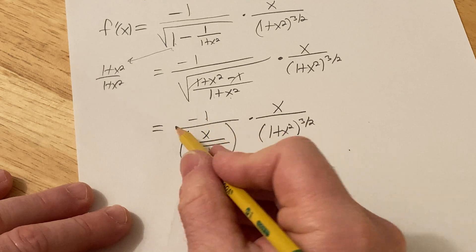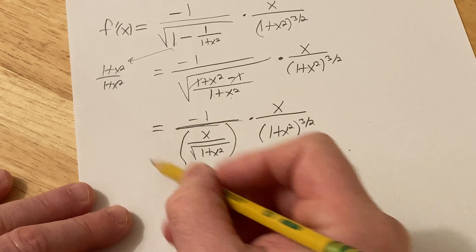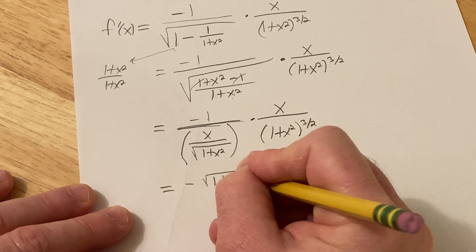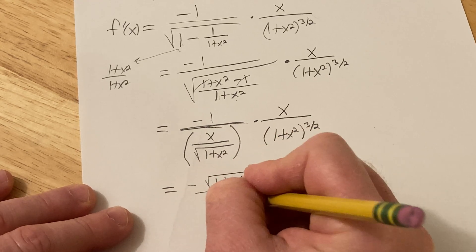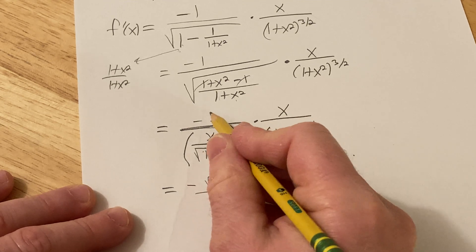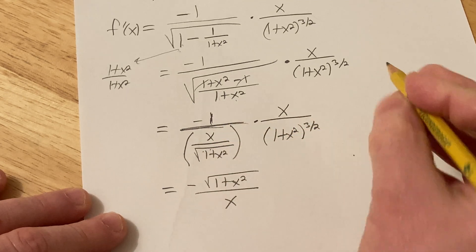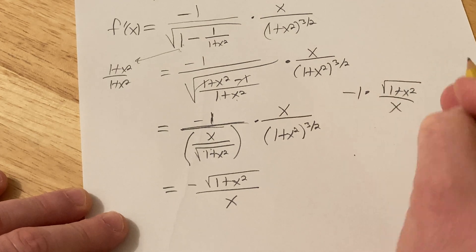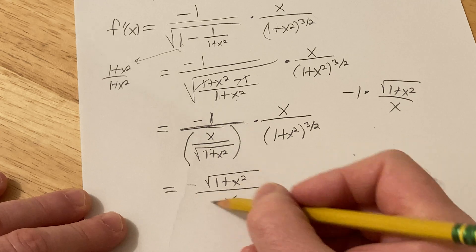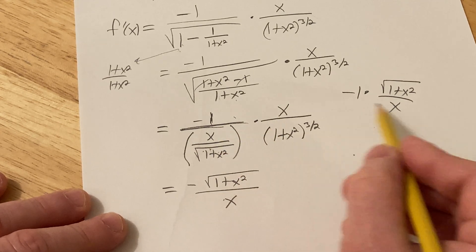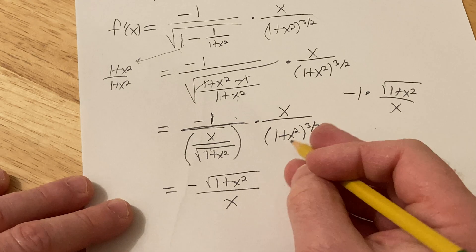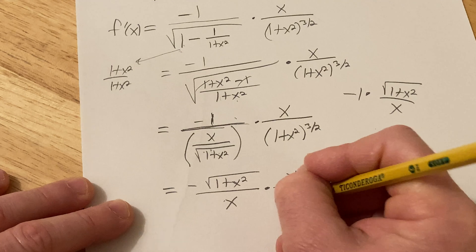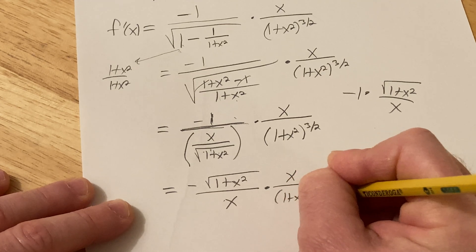All right, and then negative 1 divided by all of this basically means you multiply by the reciprocal, so this is going to be negative square root 1 plus x squared over x, because it's negative 1 divided by this, so it's really negative 1 times the reciprocal of this. Remember, division is multiplication by the reciprocal, and then times x over 1 plus x squared to the 3 halves, good stuff.